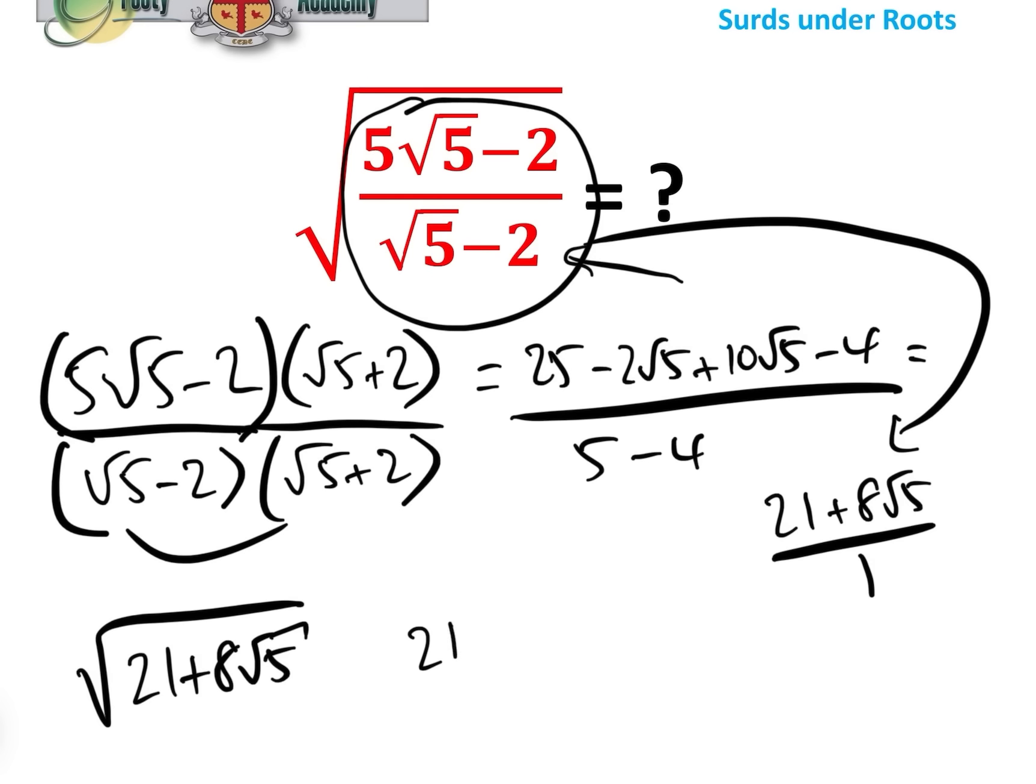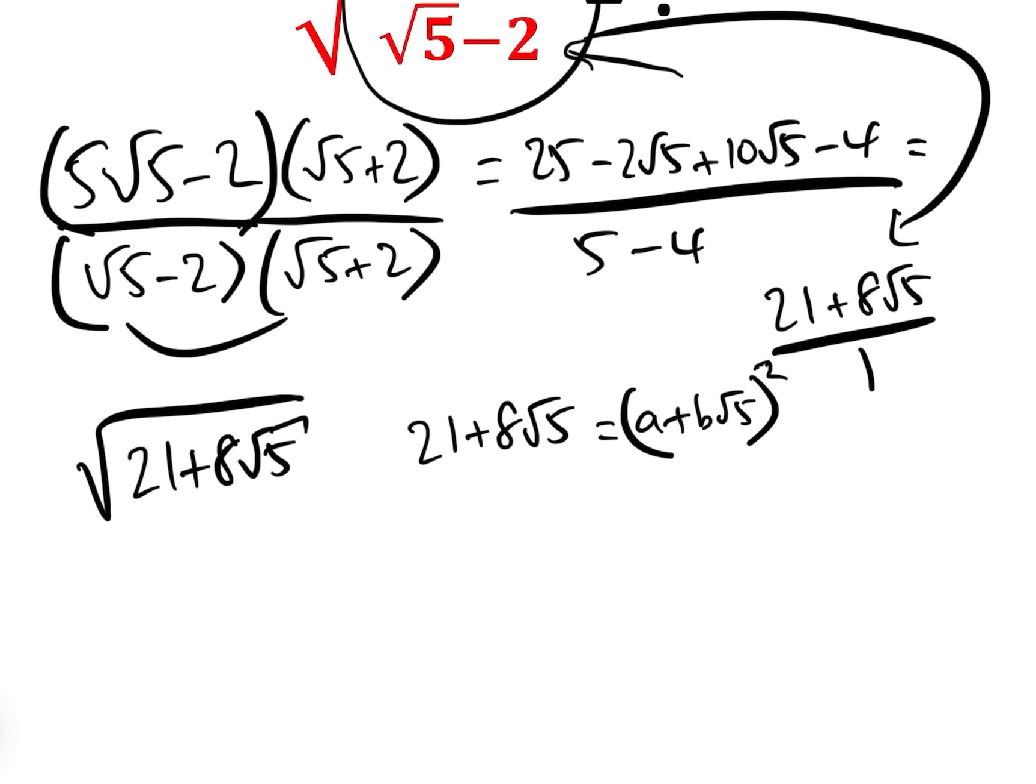So what we want to do is we want to put 21 add 8√5 as (a plus b√5) squared, and then when we take the square root of 21 plus 8√5, it will just be a plus b√5. And the way to do that is we look at half of this value here, which is 4, and we look at the factor pairs.